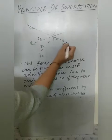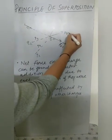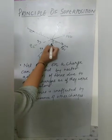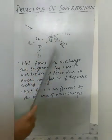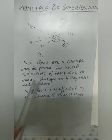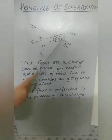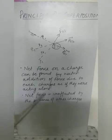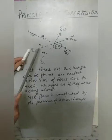The force on q₀ due to q1 is F₀₁ = k·q1·q₀ / r1². Similarly, the force due to q2 is F₀₂, and due to q3 it is F₀₃. We need to find the net force on q₀ due to all three charges. The principle of superposition states that the net force on a charge can be found by vector addition of the forces due to the individual charges. Also, the net force between any two charges is unaffected by the presence of other charges.